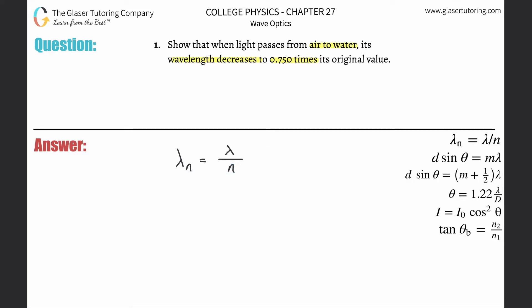So the index of refraction here for water is going to be 1.333. And the wavelength of visible light in air has an index of refraction of just one, so the wavelength will be equal to the wavelength in a vacuum.